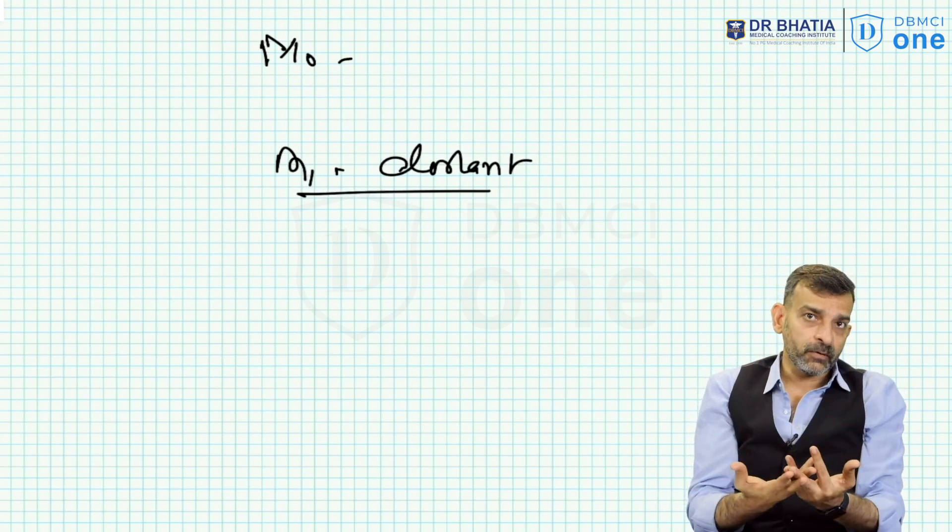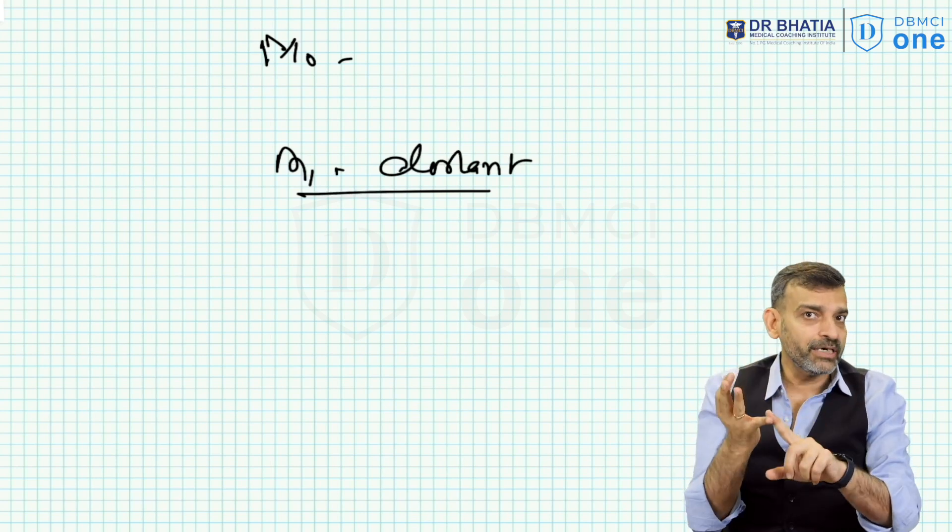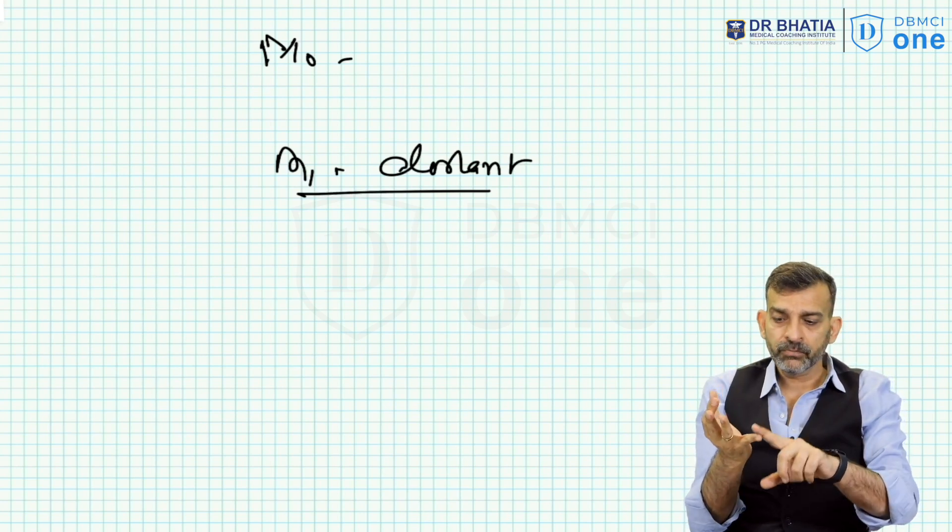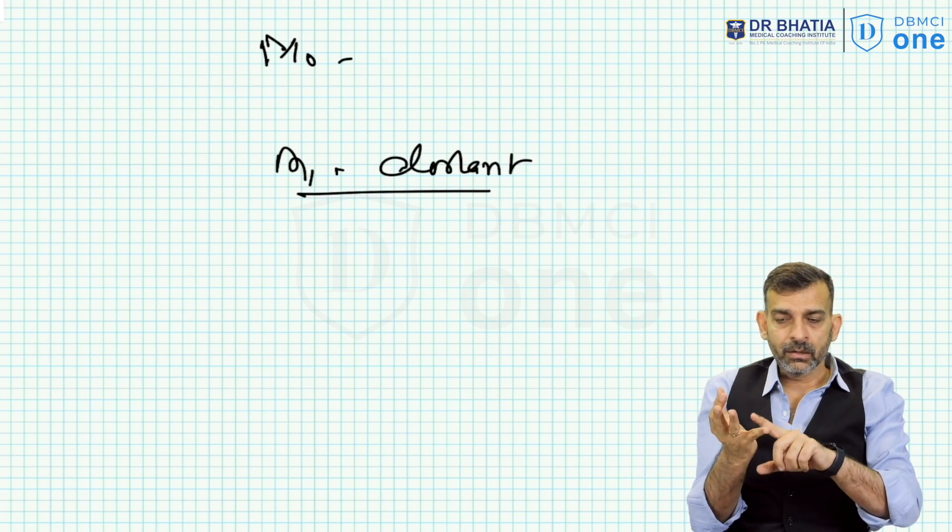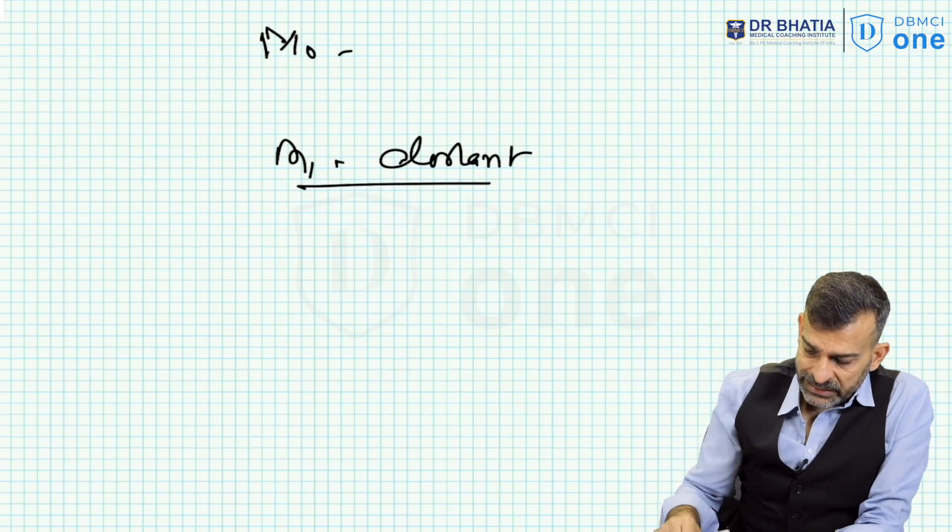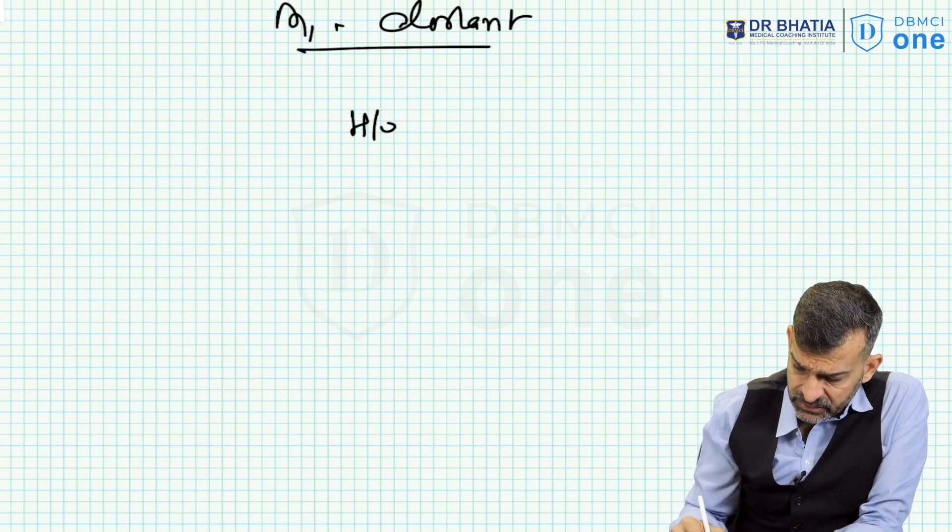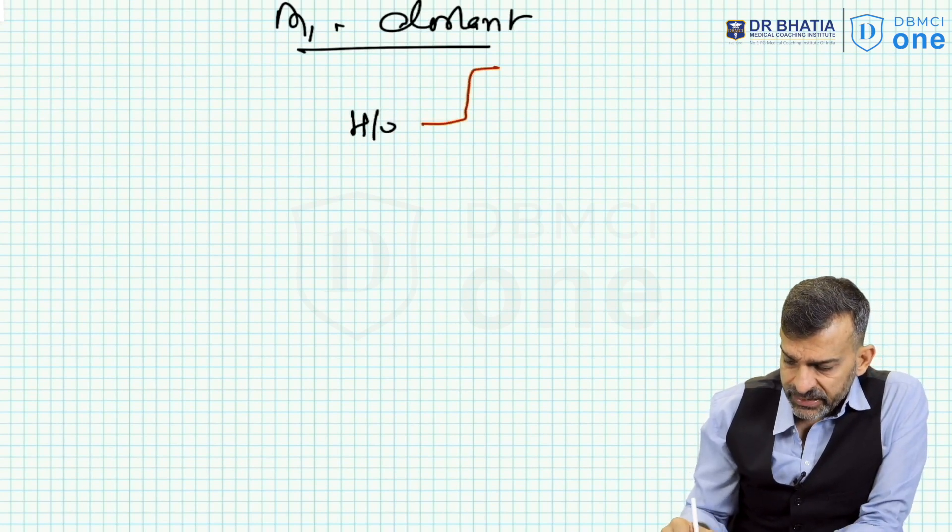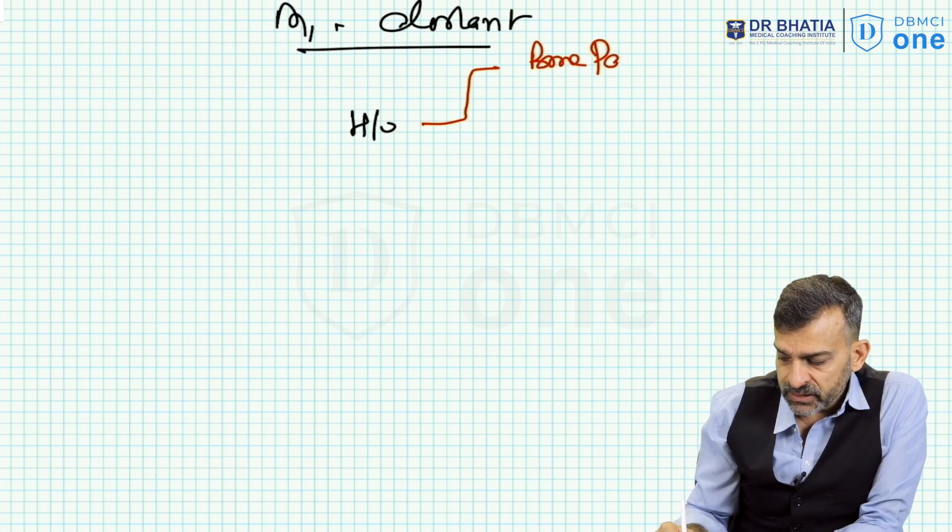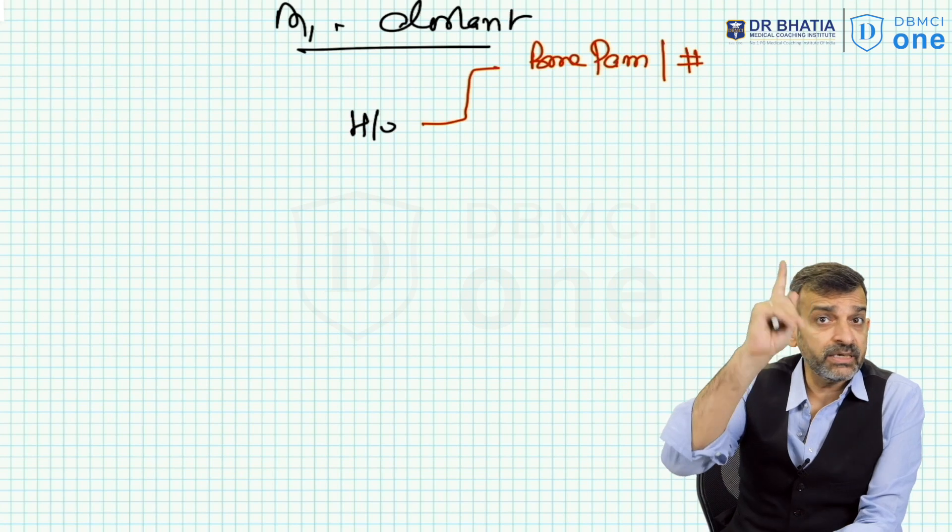...if there is distant metastasis or not? I know the four common sites of metastasis: bone, lung, liver, and brain. So I take the history of the patient. If the patient tells me there is bone pain or a pathological fracture, or in my examination as I told...